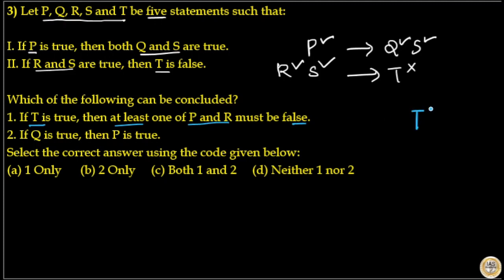Let's check when T is true. From the second statement, when T is false, R and S are true. That means when T is true, R and S must be false. So we already find the status of R when T is true—that is, R is false here.